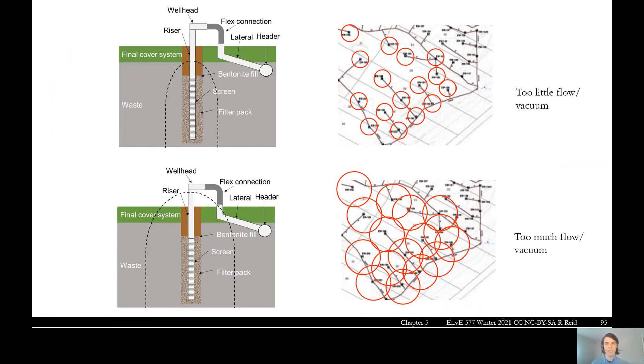This figure shows a vertical system, what the sphere of influence of each well looks like when you have too little versus too much vacuum. And this is the same figure that I showed before. So I've drawn these red circles to show the sphere of influence around each well. In this one we can see our sphere of influence in the dotted line is quite small and when you look at it from above, these circles aren't touching each other.